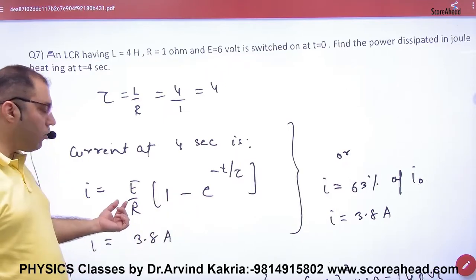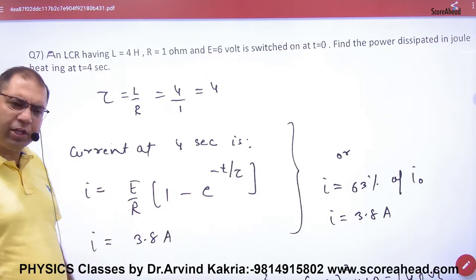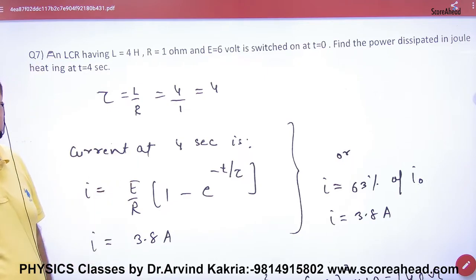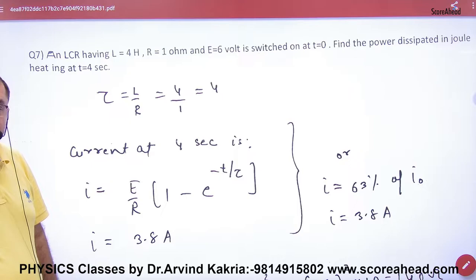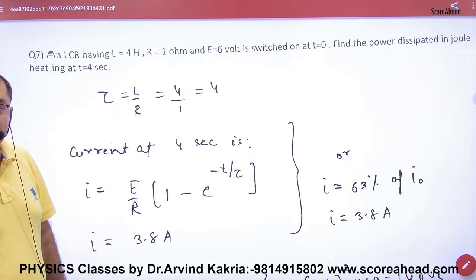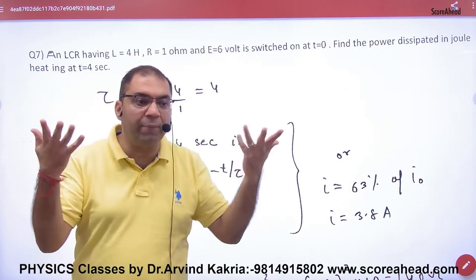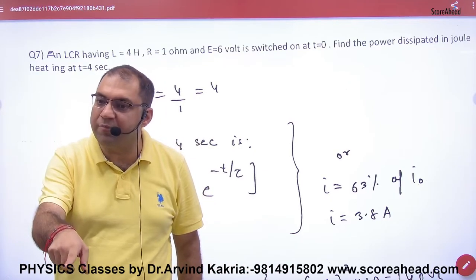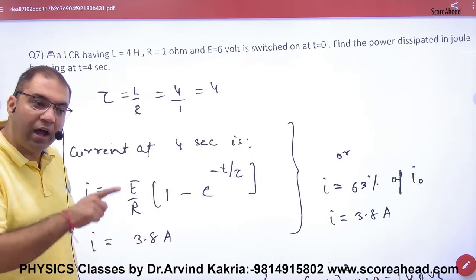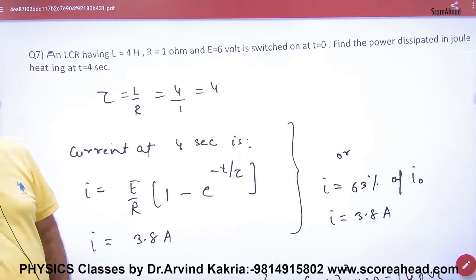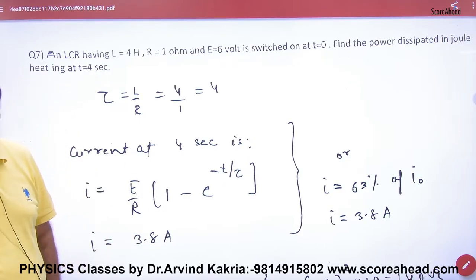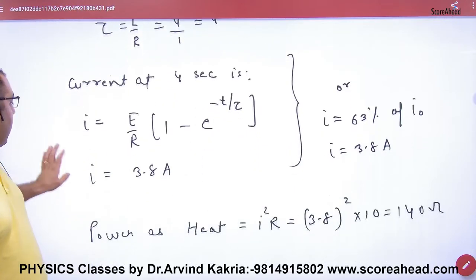The current formula — what will the current be? It is E/R, not E/Z. Why E/R for an LR circuit? Because the maximum current I₀ is E/R. We ignore the inductor because when the current becomes maximum, the inductor stops playing its role. Only R remains, so maximum current is always E/R — the inductor never appears.